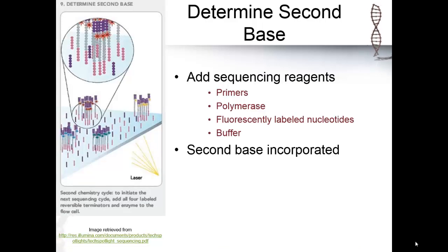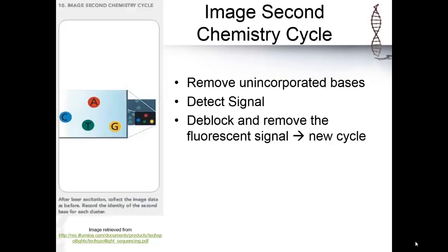The next step is determining the second base. Once again, the sequencing reagents are added with another fluorescently labeled nucleotide, detected and imaged. Here again, the image is detected by first washing away the unincorporated bases. Then the flow cell is prepared for the next cycle by removing the fluorescence and deblocking the newly added base so that a polymerase can add another base to it.